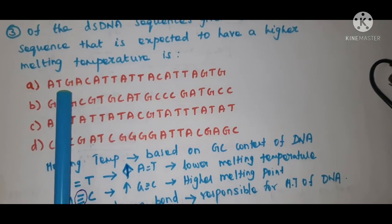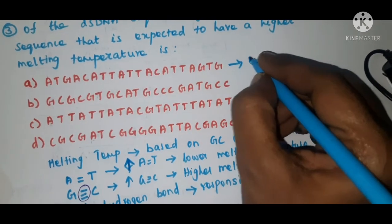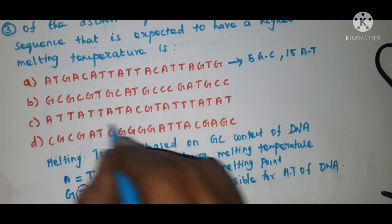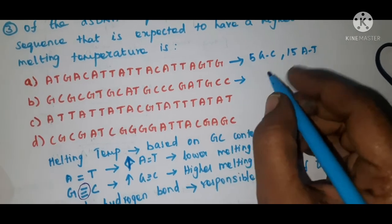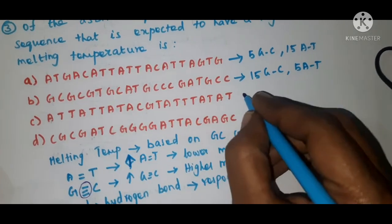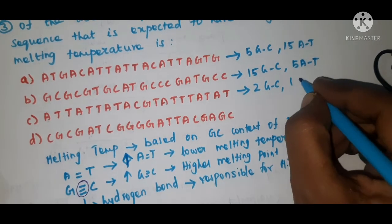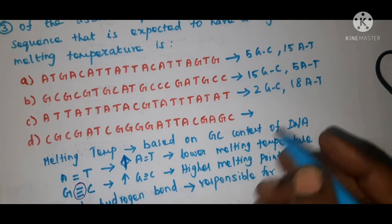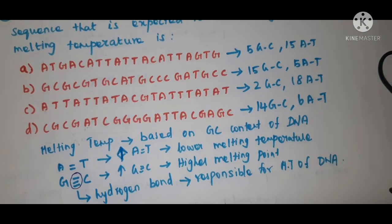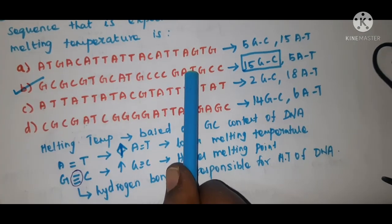Come to this problem. The first sequence has 5 GC base pairs and 15 AT base pairs. Totally, we have 20 base pairs for all the sequences. The second sequence has 15 GC base pairs and 5 AT base pairs. The third sequence has only 2 GC base pairs and 18 AT base pairs. And this sequence has 14 GC content and 6 AT base pairs. So, the second sequence is having more GC content.